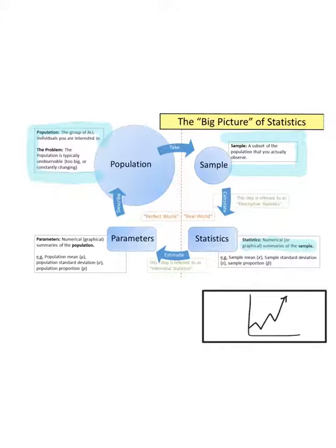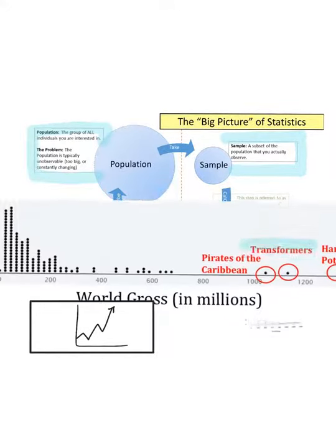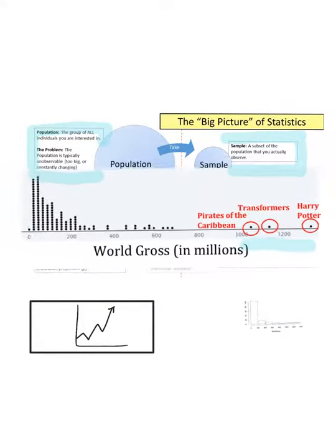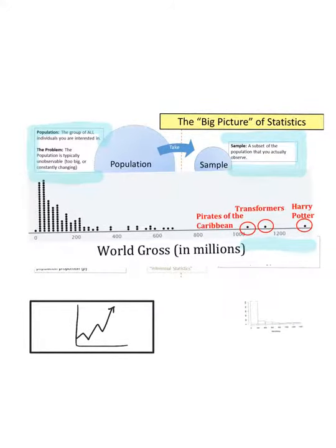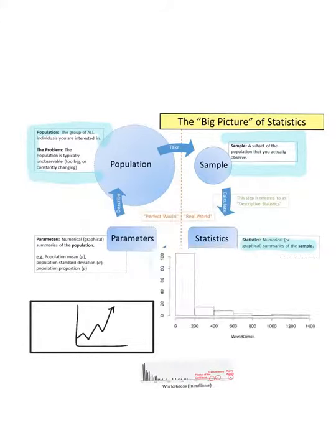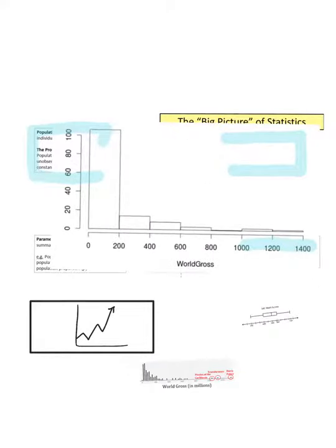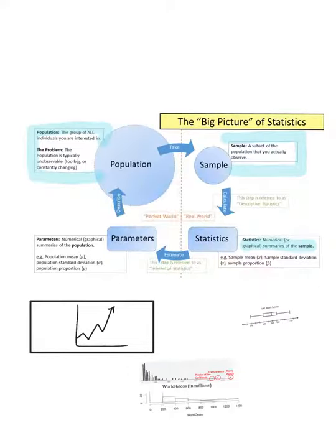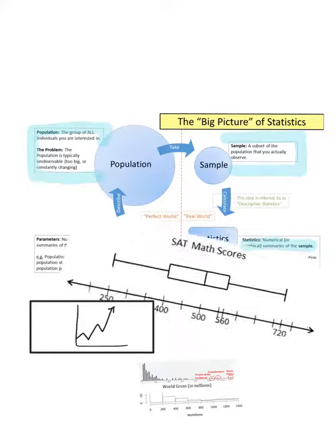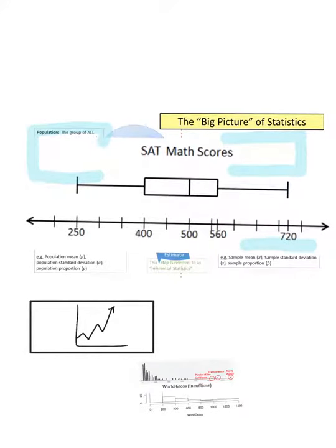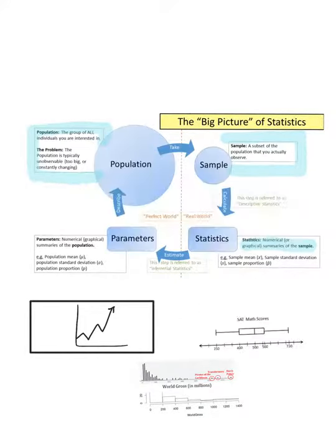We can look at the sample mean and standard deviation, and we can actually take this data and make some really cool charts. This right here is a dot plot showing world gross in millions of different movies. Here's also a representation of the same thing, but this is called a histogram. And next we've got a box-and-whisker plot. You're going to see all of these in chapter two.